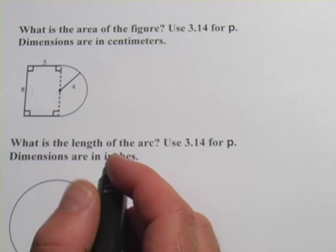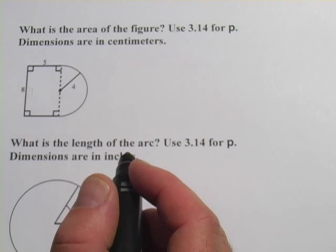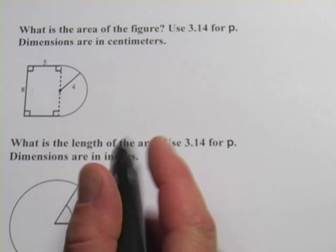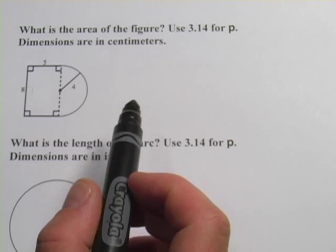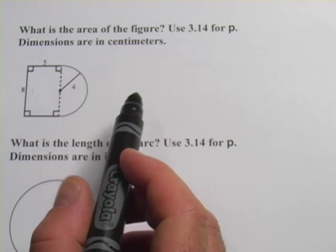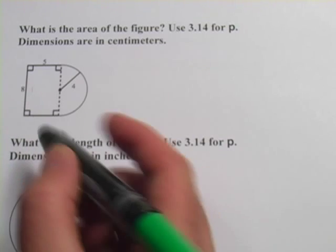In these problems, we're looking at how to figure out the areas of sectors and semicircles and the lengths of arcs in circles. This is some pretty tricky stuff. The first one says, what is the area of the figure, use 3.14 for pi. Let's take this one step at a time.